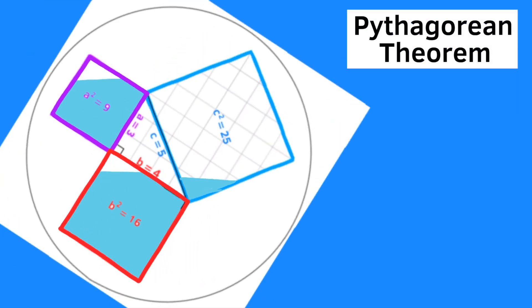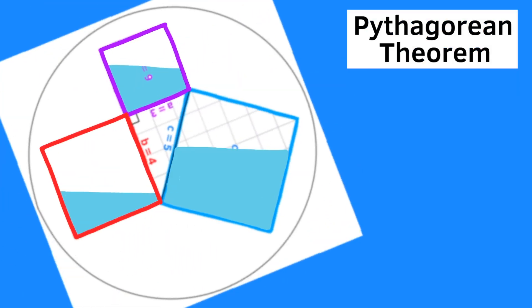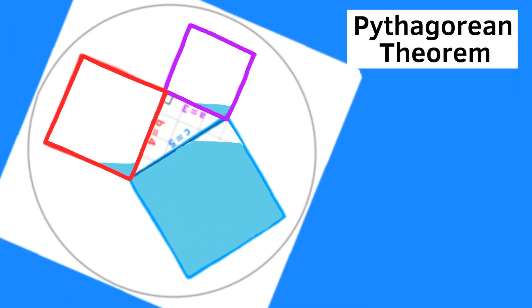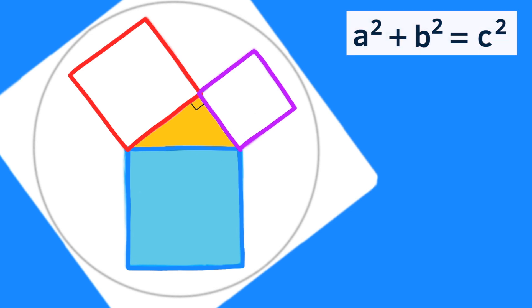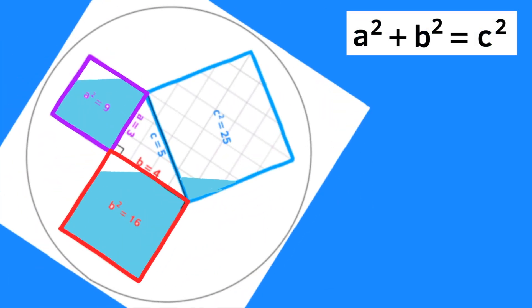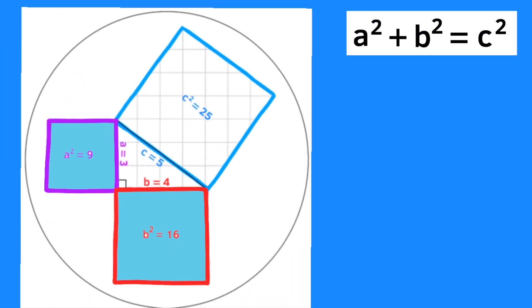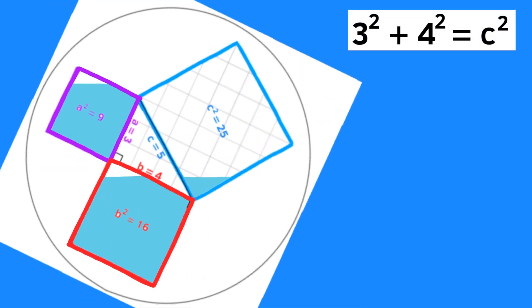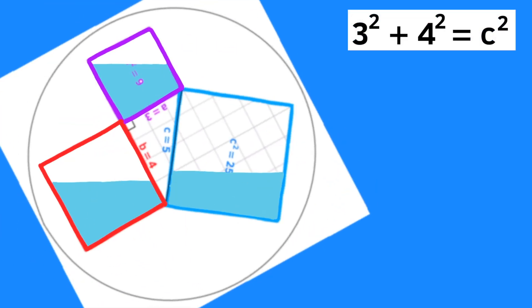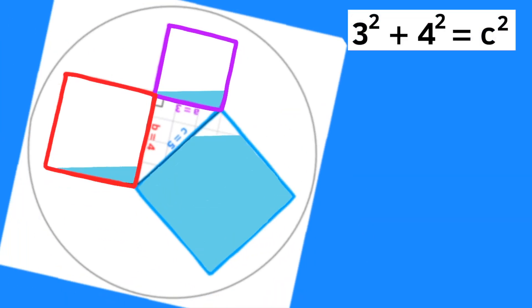The Pythagorean Theorem: A squared plus B squared equals C squared. In this case, 3 squared plus 4 squared equals C squared.